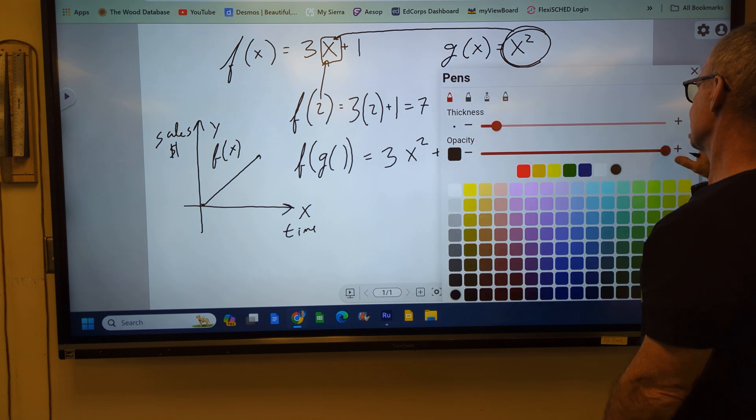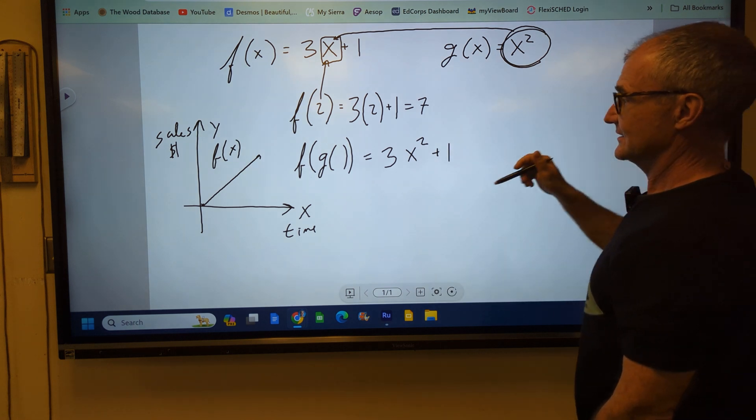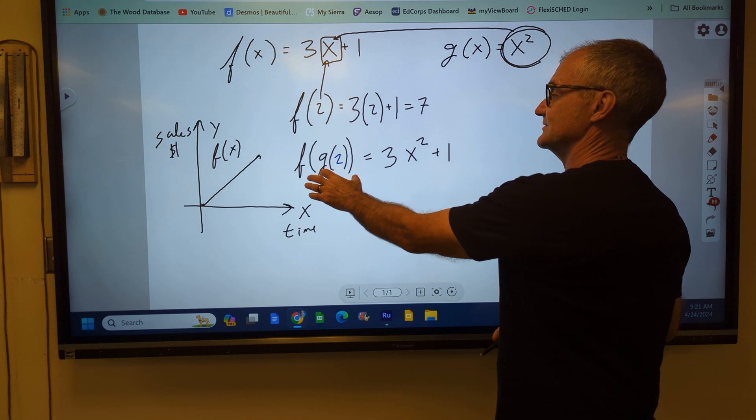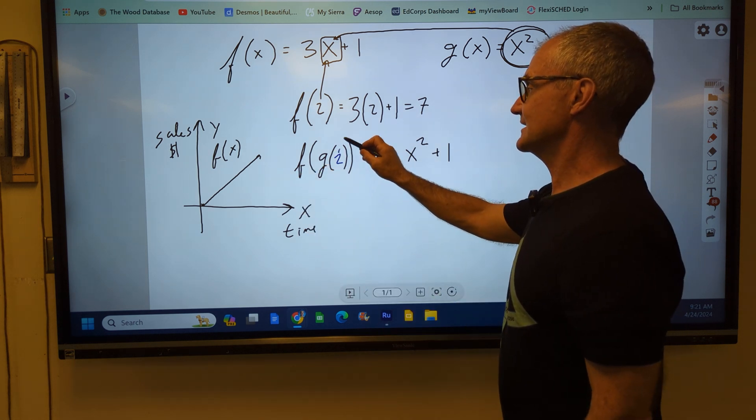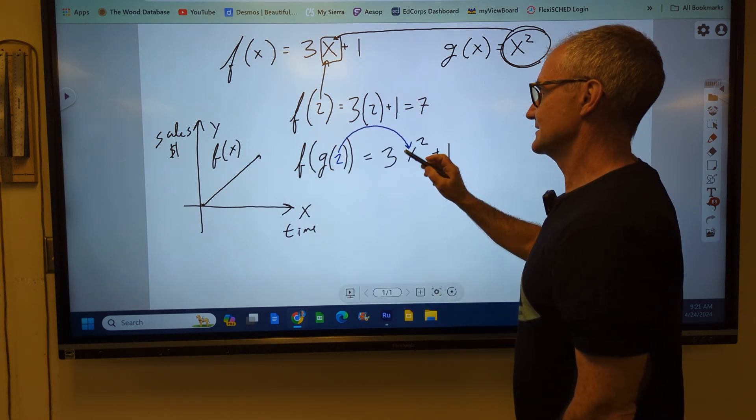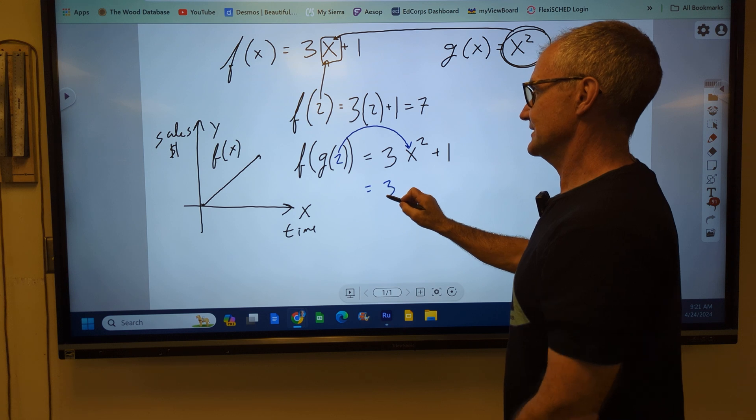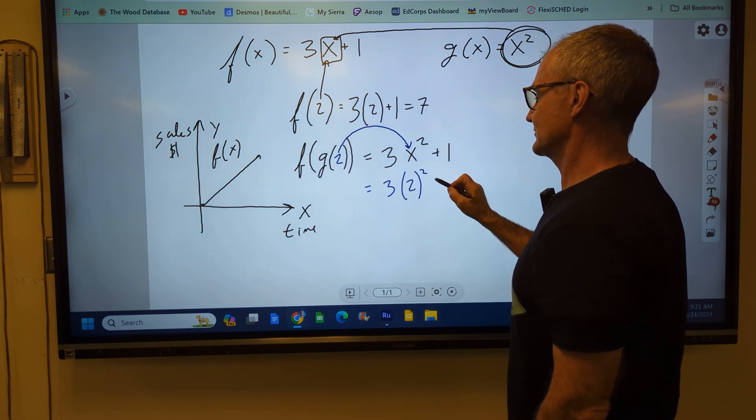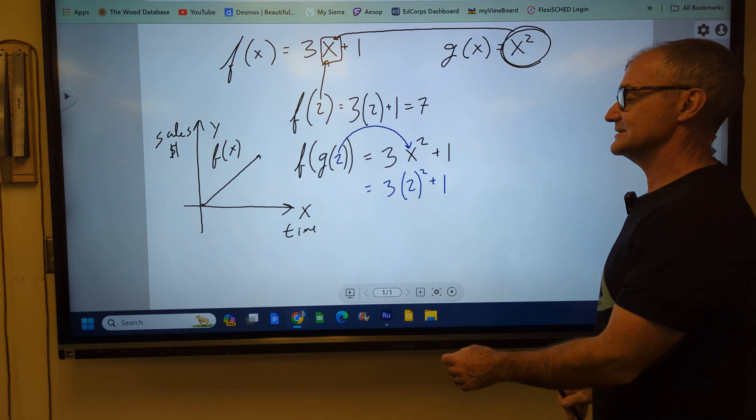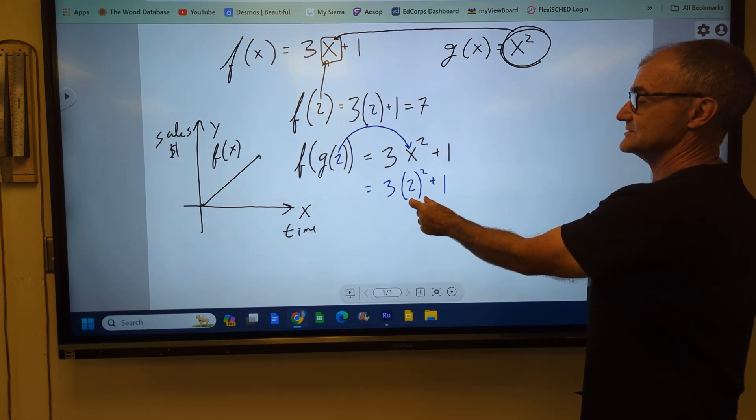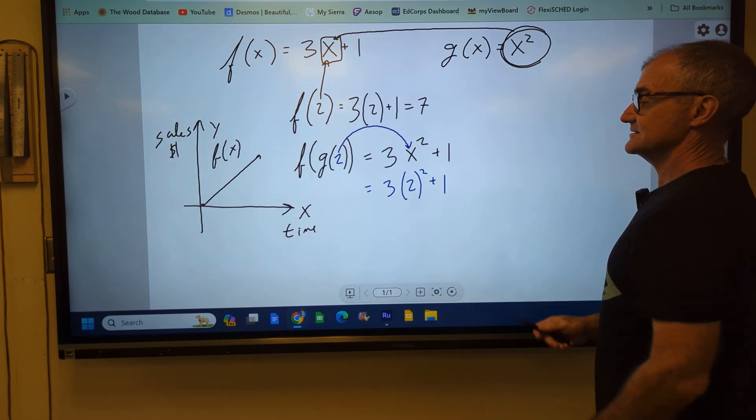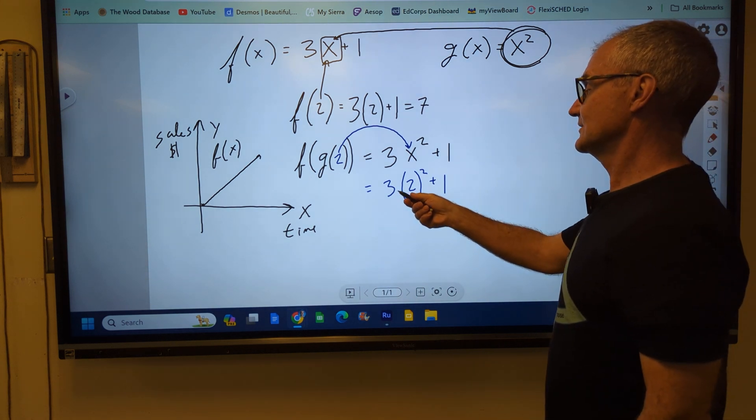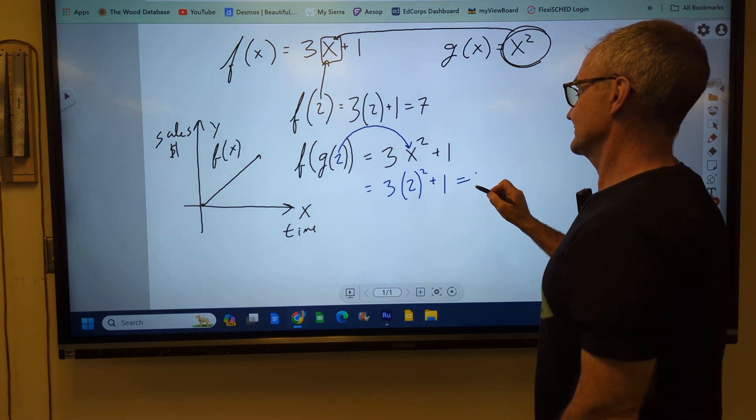And now it's saying find f of g of 2. It is saying create the composite function f of g of x. Then after you've done that, take that 2 and plug it in there. So now I have 3. 2 gets plugged in here. 2 squared plus 1. Order of operations is exponents first, then multiplication, then addition. So 2 squared is 4. 4 times 3 is 12. 12 plus 1 is 13.